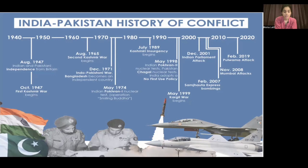After that, in 1974 India tested its first nuclear weapon near the Pakistan border, also known as Operation Smiling Buddha. Then in July 1989, the Kashmir insurgency began, which has continued running since — Kashmiris started to oppose Indian rule.